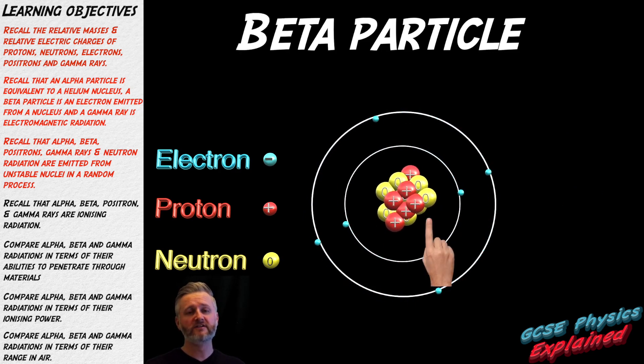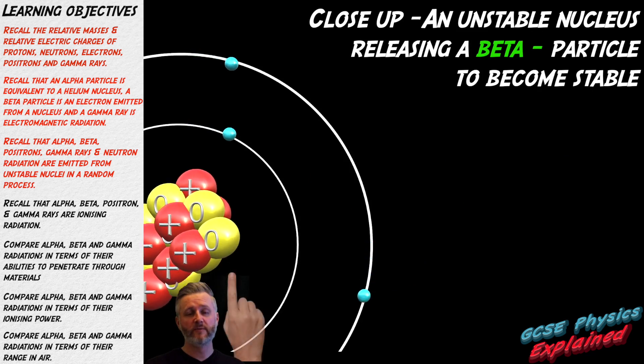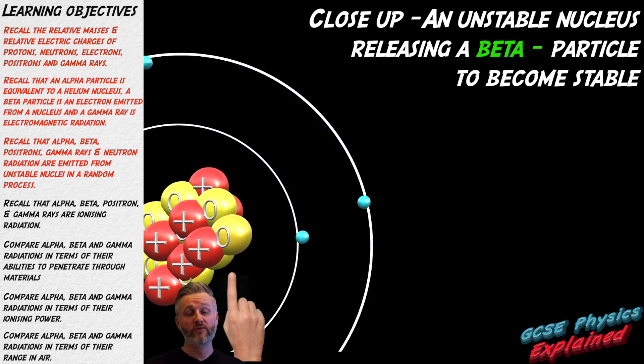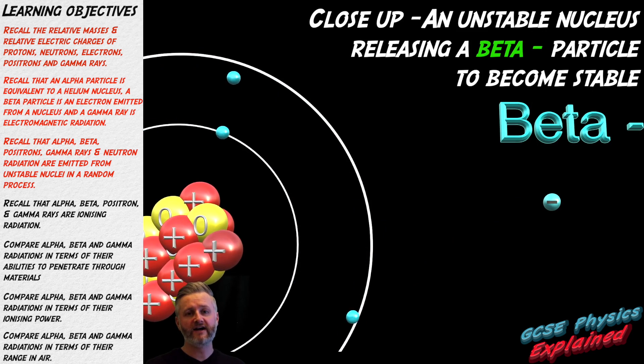A beta minus particle is a high speed electron ejected from an unstable nucleus when a neutron turns into a proton. Here's a slow motion close-up. It has a negligible mass and a charge of minus one.